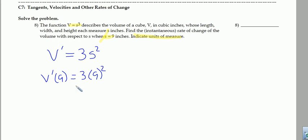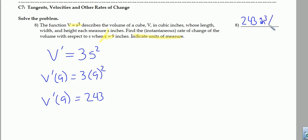81 times 3 is 243. So the volume's rate of change is 243. Now we know this is cubic inches, but cubic inches per what? This has to be a rate. What's increasing is the length of the side, and the length of the side is measured in inches. So as the length of the side reaches 9 inches, the instantaneous rate of change is 243 cubic inches per inch.